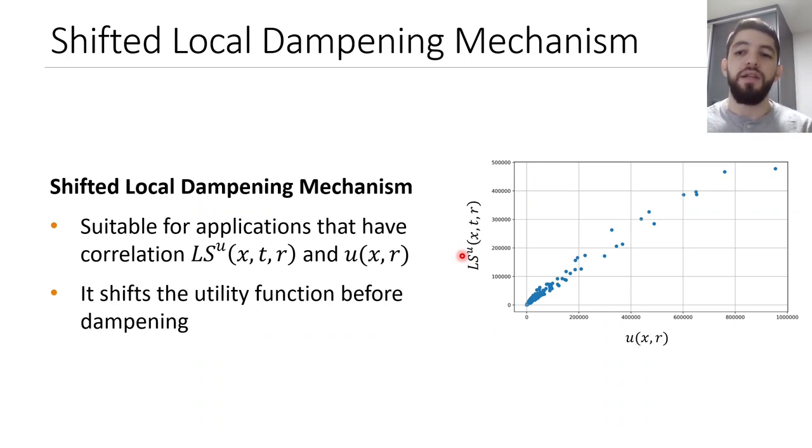For some applications, the utility function is correlated to the local sensitivity. For this case, we have a second version of the local dampening mechanism, which is the shifted local dampening mechanism. It works the same way as the standard local dampening mechanism, but before dampening, we shift the utility function, so we can leverage this correlation.